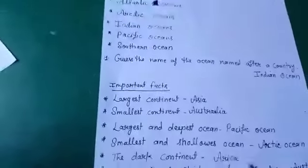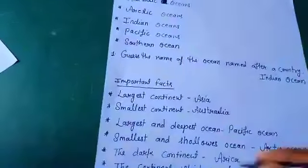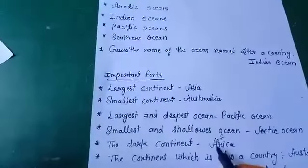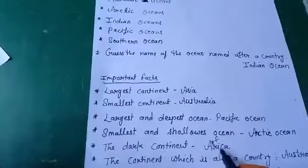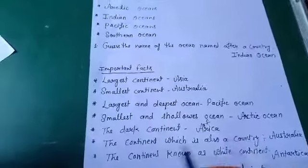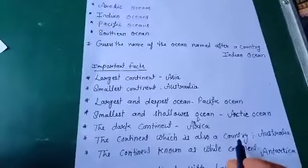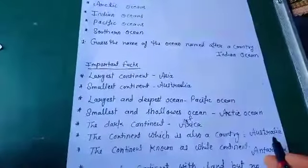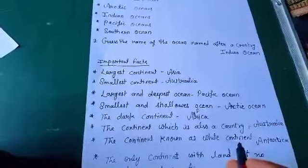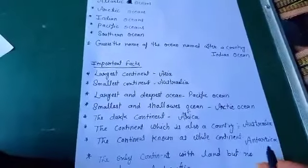I forgot to write the letter F here. What is the spelling of Africa? A-F-R-I-C-A. Next — the continent which is also a country: एक ऐसा continent जो महाद्वीप भी है और साथ-साथ देश भी है, its name is Australia. The continent known as the White Continent — एक ऐसा महाद्वीप जो सफ़ेद continent की नाम से जाना जाता है — is Antarctica.